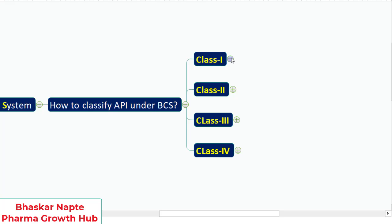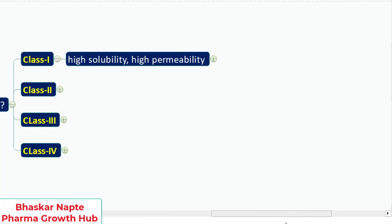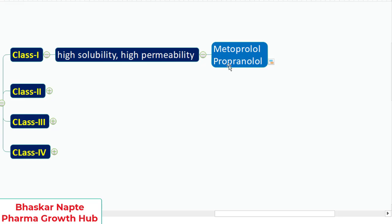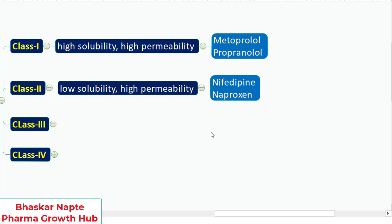These four different classes explain your drug substance solubility and permeability. Class 1 means any drug substance that is highly soluble as well as highly permeable, with examples being metoprolol and propranolol. BCS Class 2 drug substances have low solubility but high permeability, with examples being nifedipine and naproxen.